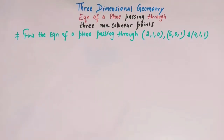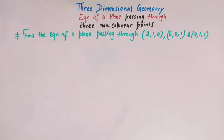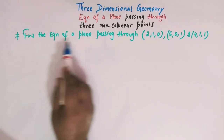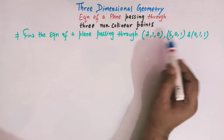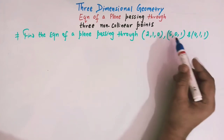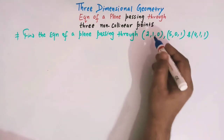Hello viewers, in today's class we are going to discuss one important problem from three-dimensional geometry. Here we are going to find out the equation of a plane passing through three non-collinear points. We have already discussed this topic in detail in our earlier videos, and here just for the sake of some learners we can solve a particular problem. We have to find the equation of a plane passing through these three points: (2,1,0), (5,0,1), and (4,1,1).